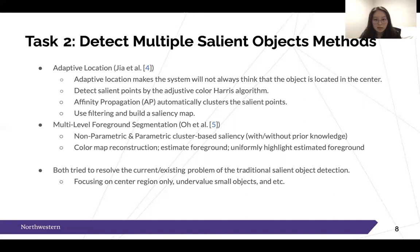Bo et al., on the other hand, proposed a multi-level foreground segmentation. They obtain saliency through parametric and non-parametric clustering, where the difference is simply whether prior knowledge is involved. Their method reconstructs the color map, enhances the image, estimates the foreground, uniformly highlights the estimated region to include multiple objects, and then performs segmentation with clusters. Although these approaches are quite different, both methods try to resolve the existing problems of traditional salient object detection methods.